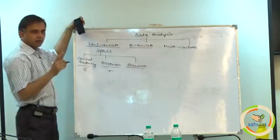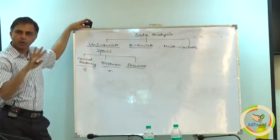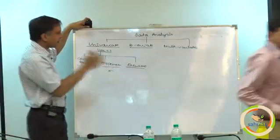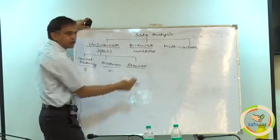For bivariate analysis, since there was only one variable before, I cannot apply correlation. If I note down only age, there is no correlation. There must be a second variable. When two variables are there, the first issue is: are they related? This is called correlation.